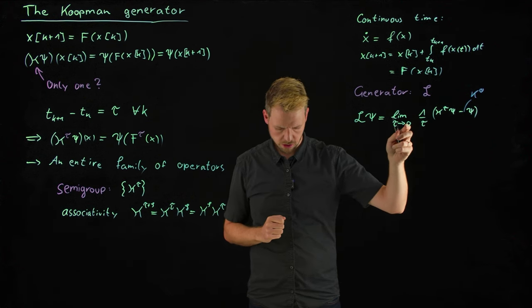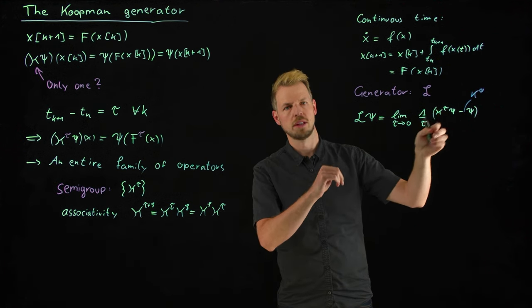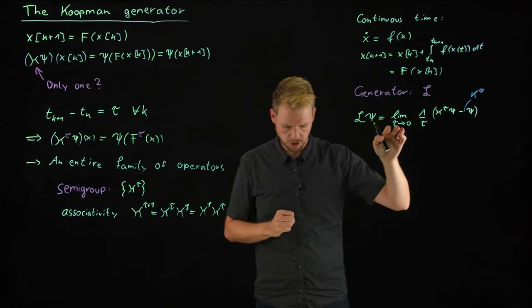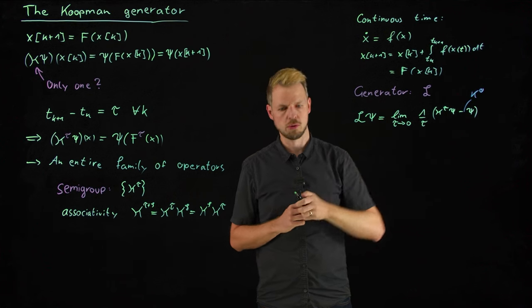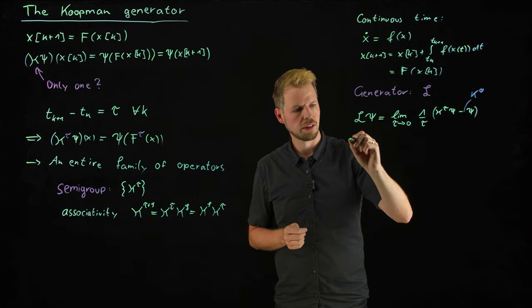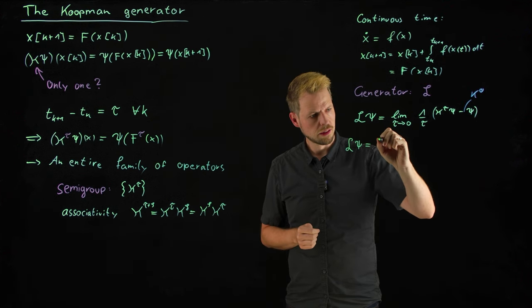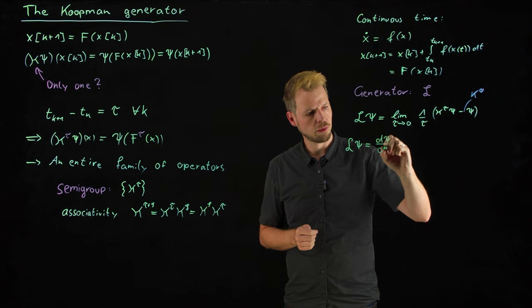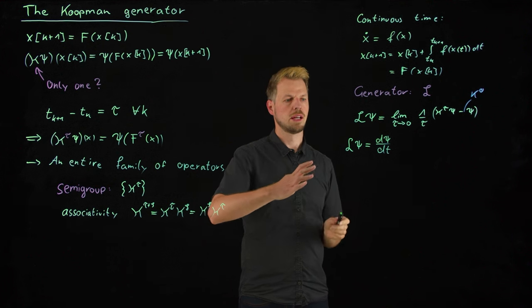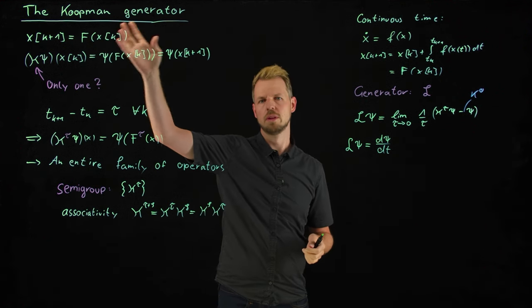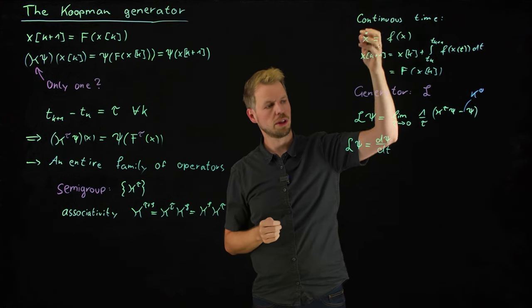Without going into the details, when does this exist, how can we do it, let's just say that we can. And what you then get is the differentiation of this observable. So what you can find is that L psi of x equals the time derivative of this observable function. So quite naturally, this is the time derivative, similar to where we have our flow to be a discrete time mapping and the little f being the mapping from the state to its temporal derivative.